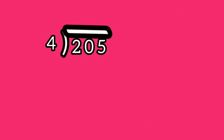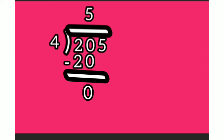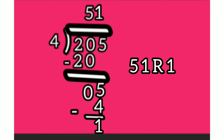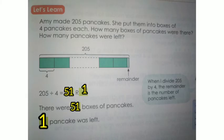Let me divide 205 by 4. How many times do you get 20 by 4? 5 times. 5 fours are 20. Now subtract 20 from 20, we get 0. Bring down 5. How many times do you get 5 by 4? 1 time. Now subtract 5 minus 4, we get 1. Finally, we got the remainder as 1. How many boxes of pancakes were there? There were 51 boxes of pancakes. And how many pancakes were left? 1 pancake was left.